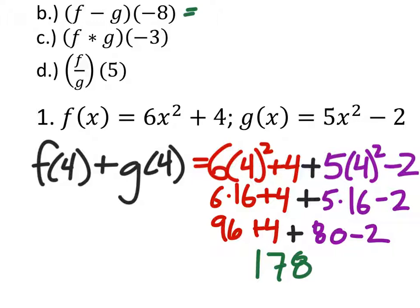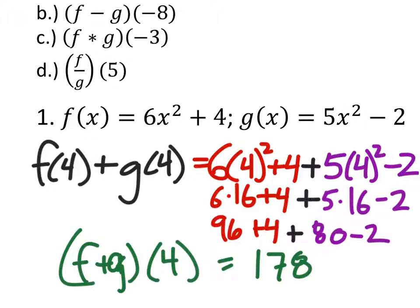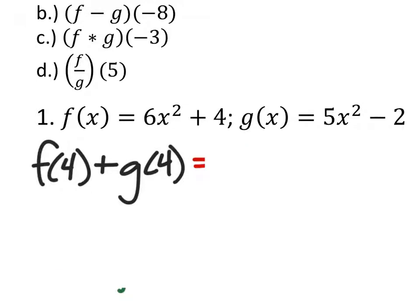So, we would write this f minus g of negative eight. Oh, yeah, that's right. I got rid of it on purpose. So, f plus g of four equals 178. So, let's do f minus g. For this one, the only thing that's going to change is that I should have a minus there now. So, it's going to be the same function. It's just, oh, and it's not a four anymore.